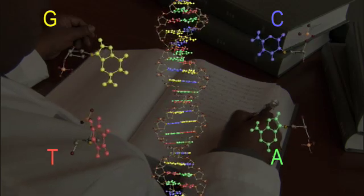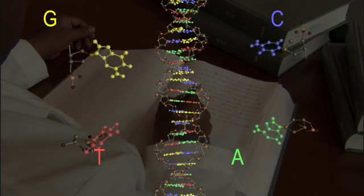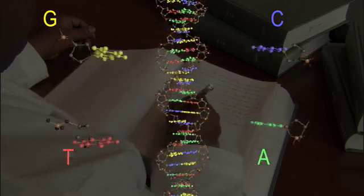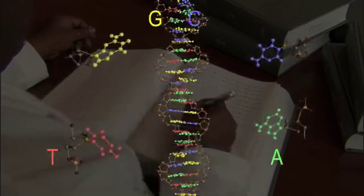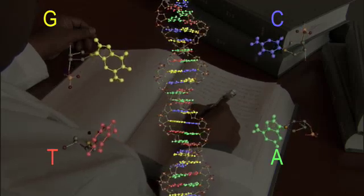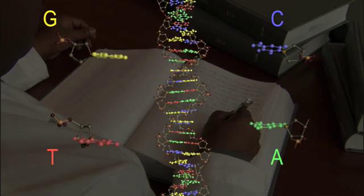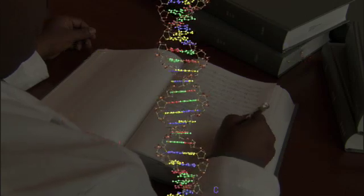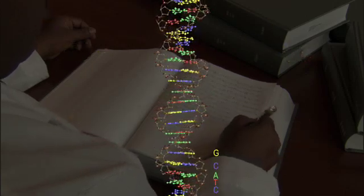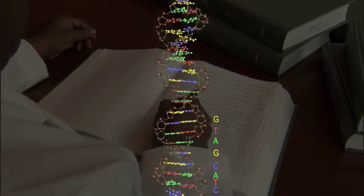There are two of these base molecules for each step on the ladder, and it is always either A and T together, or G and C together. So if you know one side of the step on the ladder, you automatically know the other side as well.